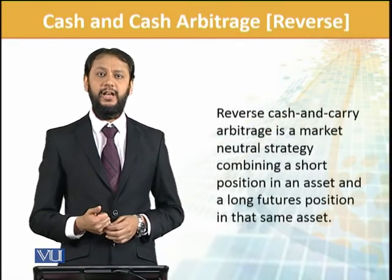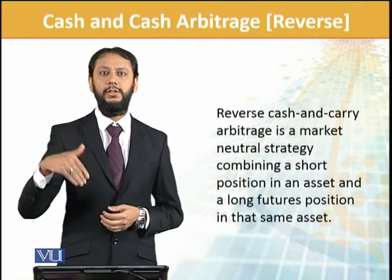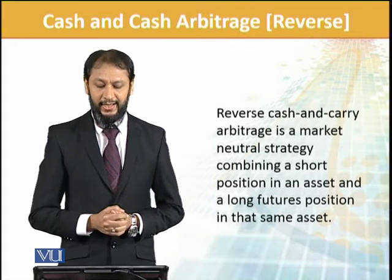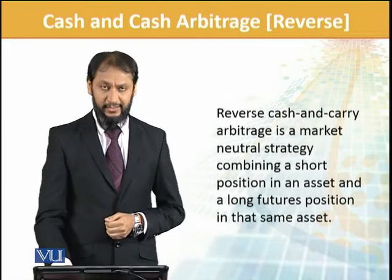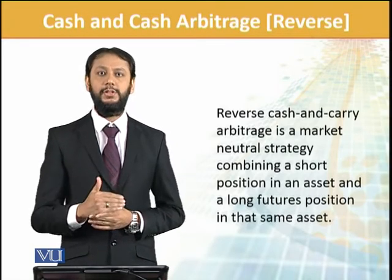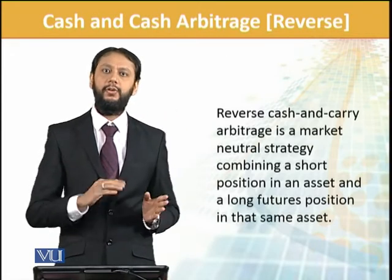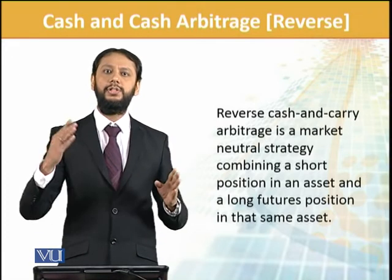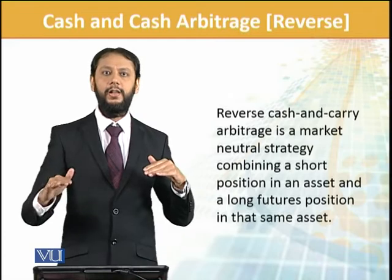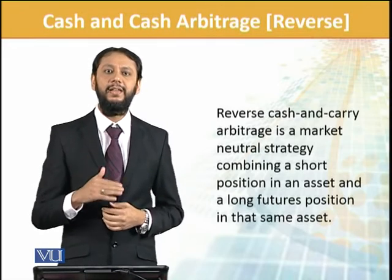There is an extension called reverse arbitrage. Until now, we were saying that if the future price is more than our calculation, we buy and then sell in the future. It could work the other way around as well. Reverse is a market-neutral strategy combining a short position in an asset and a long future in that same asset. If something is overpriced as per calculation — theoretically its value should be lower — then we short sell it and buy it in the future. Previous strategy: buy now and sell in future. This strategy: short sell now and buy in future at the realistic value — selling at a higher rate and buying at a lower rate. If the difference is more than the interest rate, you can gain money. This is referred to as reverse arbitrage.